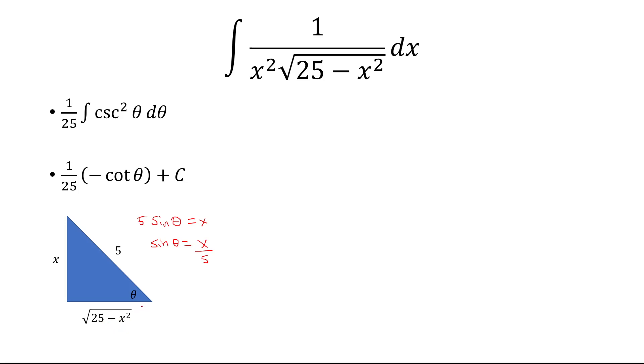And so with cotangent, cotangent is adjacent over opposite. So that's going to be negative square root of 25 minus x squared over 25x plus C. And that is our final answer.